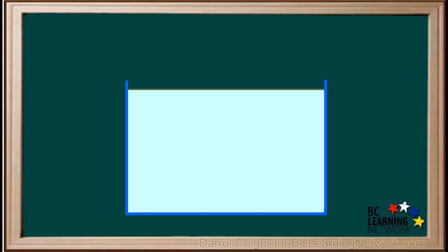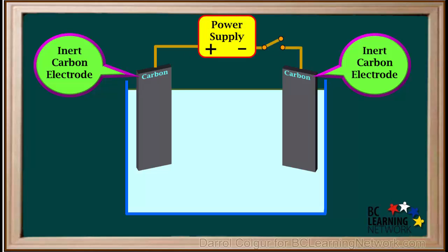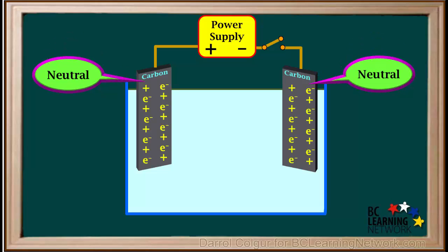This is what we call a type 1 electrolytic cell. We'll start off with two inert carbon electrodes in a single container. Then we add a direct current power supply and wires. Before the power supply is connected, the electrodes are both neutral. Using simplified symbols, we'll represent a few protons by plus signs and a few electrons as E's with a negative charge. Because they are neutral, the number of electrons is equal to the number of protons.